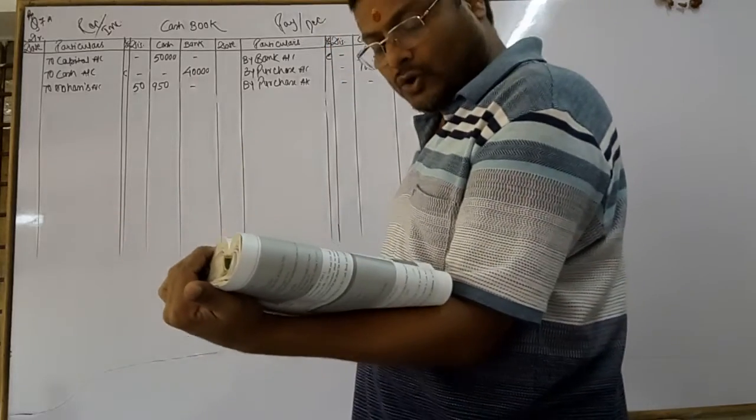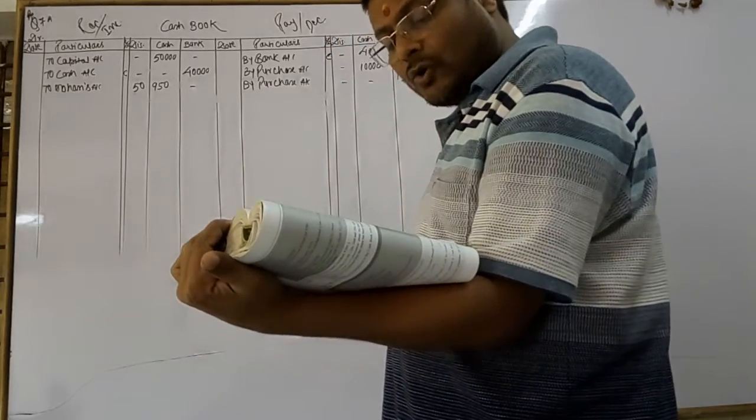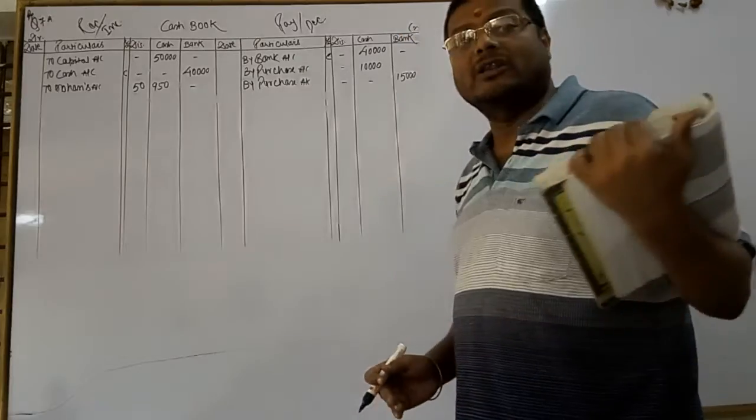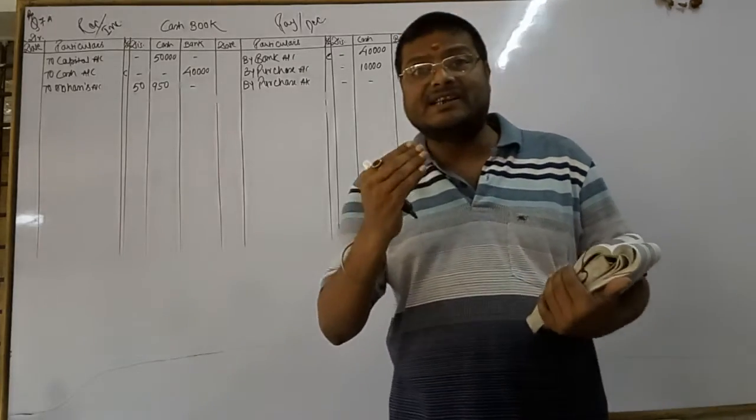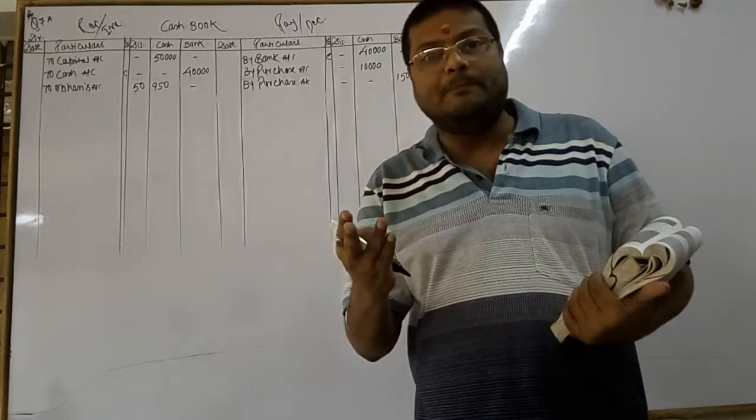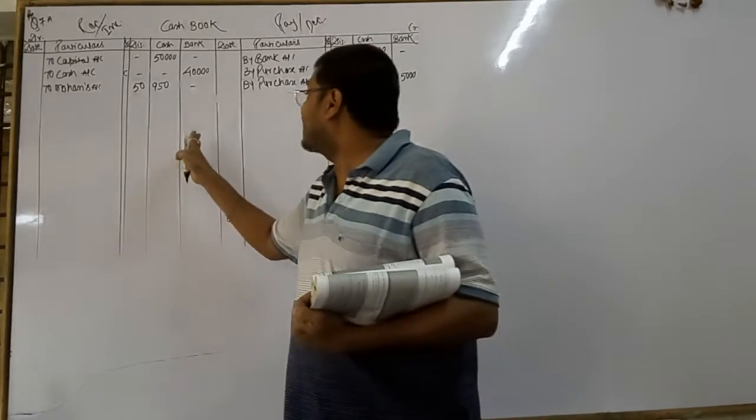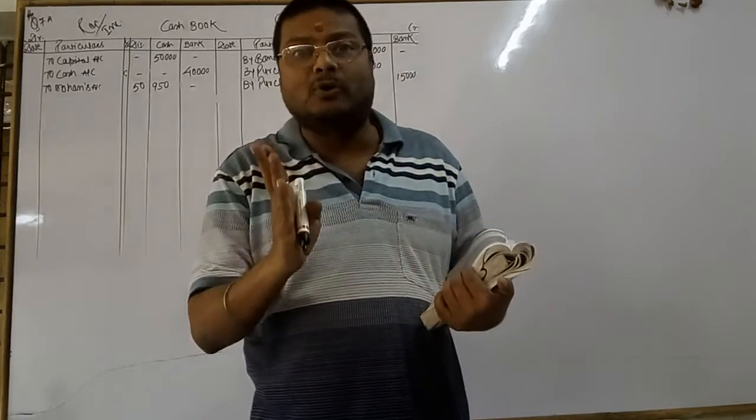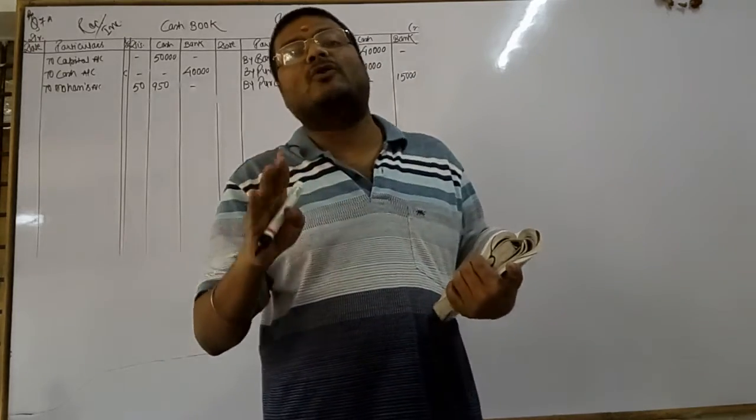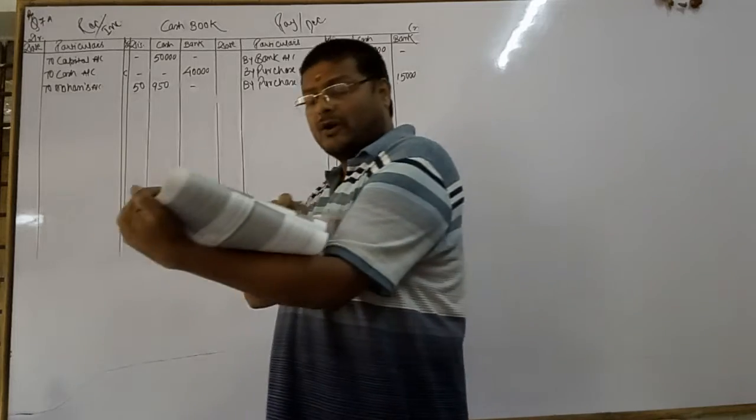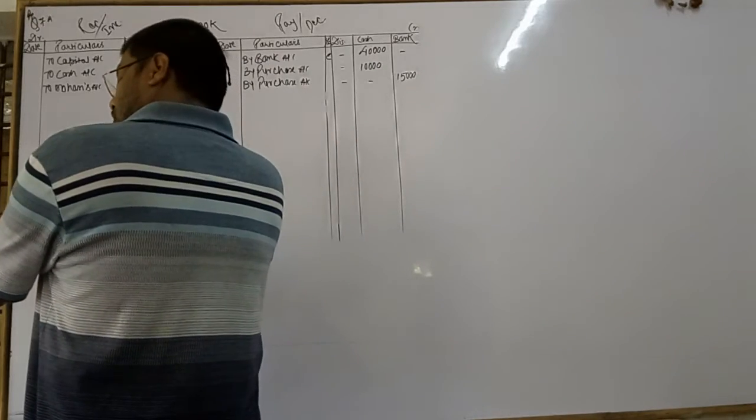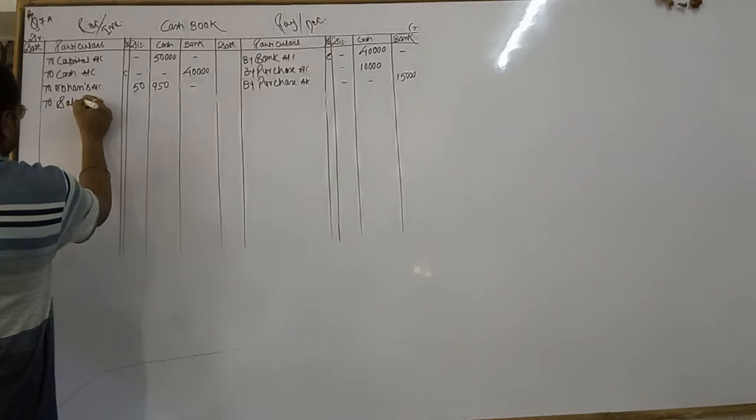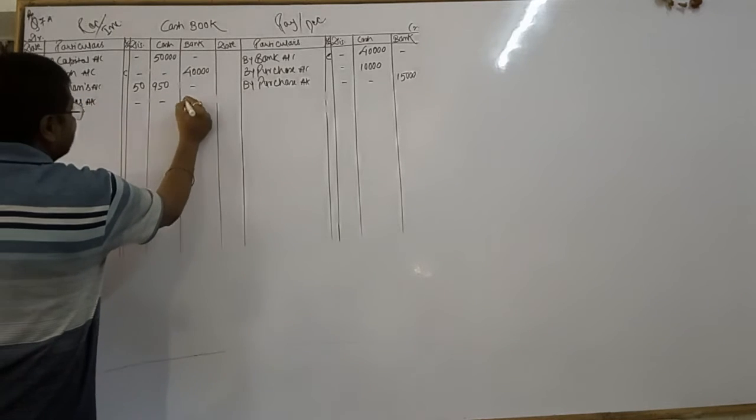Bought goods by check. Sold goods for check rupees 20,000 and deposited in bank on the same day. Check received and immediately deposited into bank are recorded in bank column, but check received but not yet deposited into bank are recorded in checks in hand column. Sold goods for check, for sales rupees 20,000.